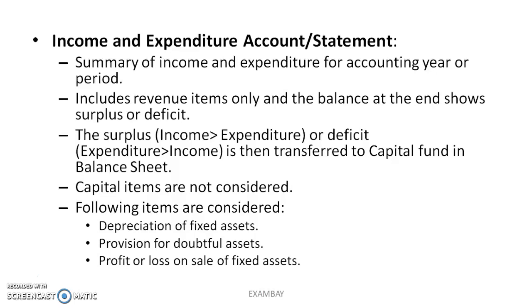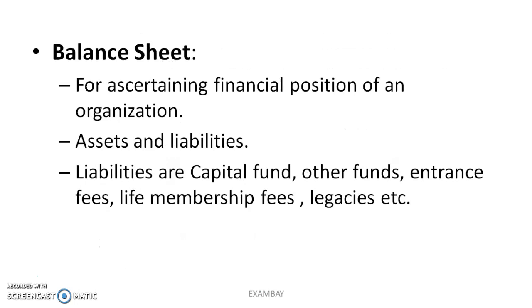Now the Balance Sheet is for ascertaining the financial position. The balance sheet is the same as in profit organizations - there is already a video on this so you can read from that too. It has assets and liabilities. On the liabilities side, the capital fund and other funds come. All receipts that come in are a liability on that NGO - the money I gave them makes the NGO liable to spend that money genuinely, that's why it is a liability.